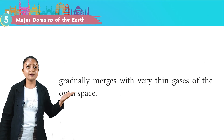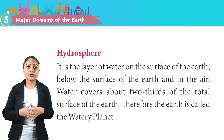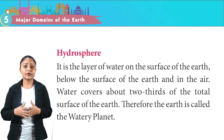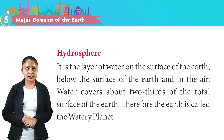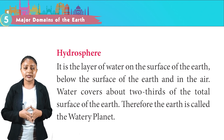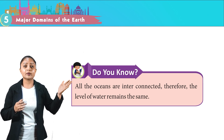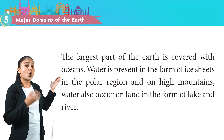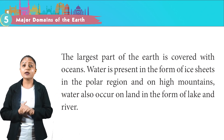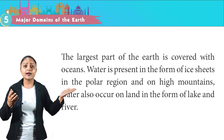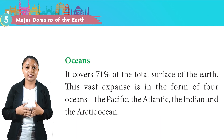Hydrosphere is the layer of water on the surface of the earth, below the surface of the earth and in the air. Water covers about two-thirds of the total surface of the earth; therefore, the earth is called the watery planet. All the oceans are interconnected, so the level of water remains the same. Water is present in the form of ice sheets in the polar regions and on high mountains, and also occurs on land in the form of lakes and rivers.